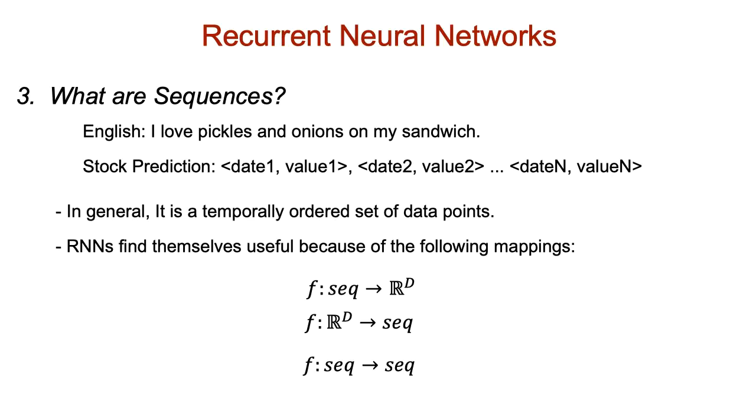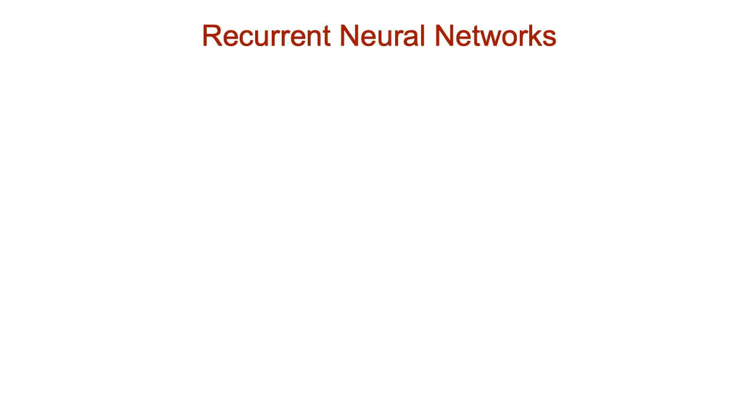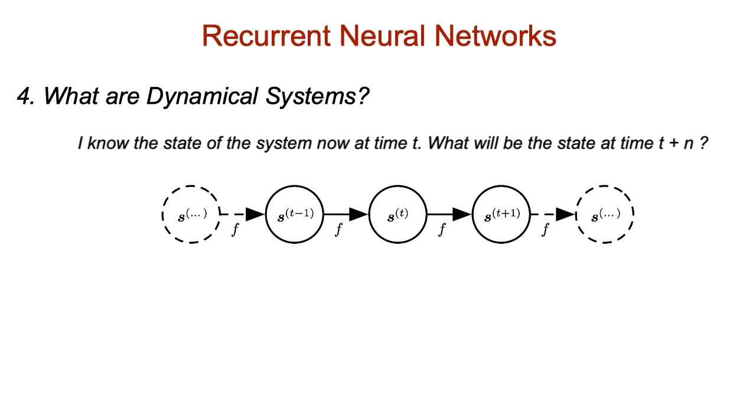But before we look at the basic architecture, let's first derive some intuition behind recurrent nets by introducing the concept of dynamical systems. Discrete dynamical systems answer the question, I know the state of a system now at time t, so what will the state of the system be at time t plus n? This is also the question we want our recurrent net applications, like stock prediction, to do. You know the current market and some past info, so what will be the state of the market in the future?